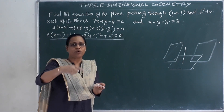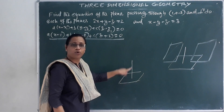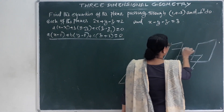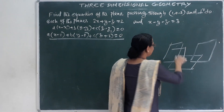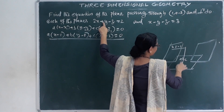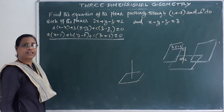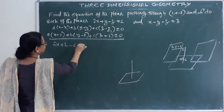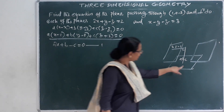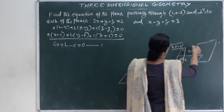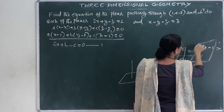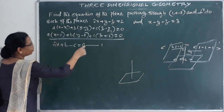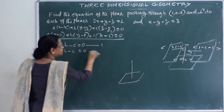Since our required plane is perpendicular to the first plane, their normals satisfy the dot product equal to zero. The first plane has normal (2, 1, -1), giving 2A plus B minus C equal to 0 — equation 1. The second plane has normal (1, -1, -1), giving A minus B minus C equal to 0 — equation 2.